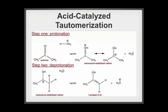In the mechanism of acid-catalyzed tautomerization, protonation precedes deprotonation. In the first step, a lone pair from the oxygen attacks a proton on the hydronium ion. This forms water and a resonance-stabilized cation. In the second step, water acts as a base, deprotonating the cation. This step forms 1-propene-2-ol as well as regenerates the catalyst.